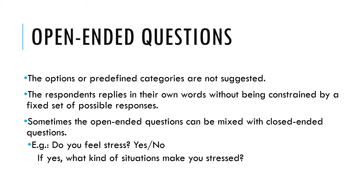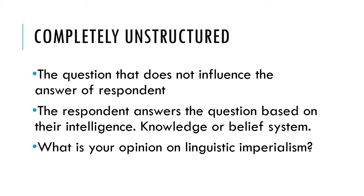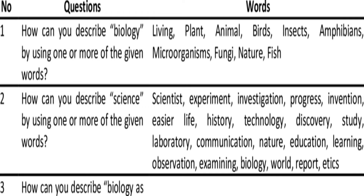For example: 'Do you feel stressed? Yes or no? If yes, what kind of situations make you stressed?' There are two types of open-ended questions: completely unstructured and word association. Completely unstructured questions do not influence the answer of respondents — they answer based on their own intelligence, ideas, knowledge, or belief system. For example: 'What is your opinion on linguistic imperialism?' For word association, words are presented and the respondent mentions the first word that comes to mind. For example, if the interviewer says 'English,' the respondent may say 'language' and elaborate on why English is associated with language.